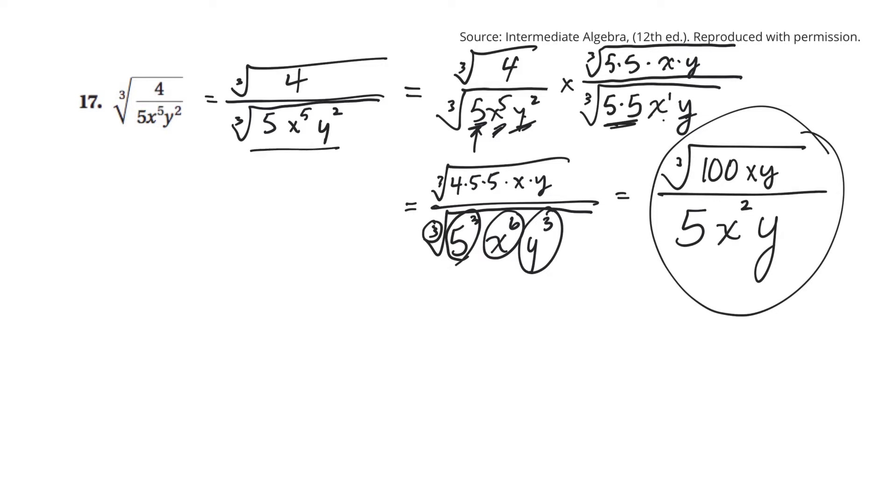Hopefully, that helps in determining what you need to multiply a denominator by in order to get rid of the radical on the bottom. That's it. Thank you.